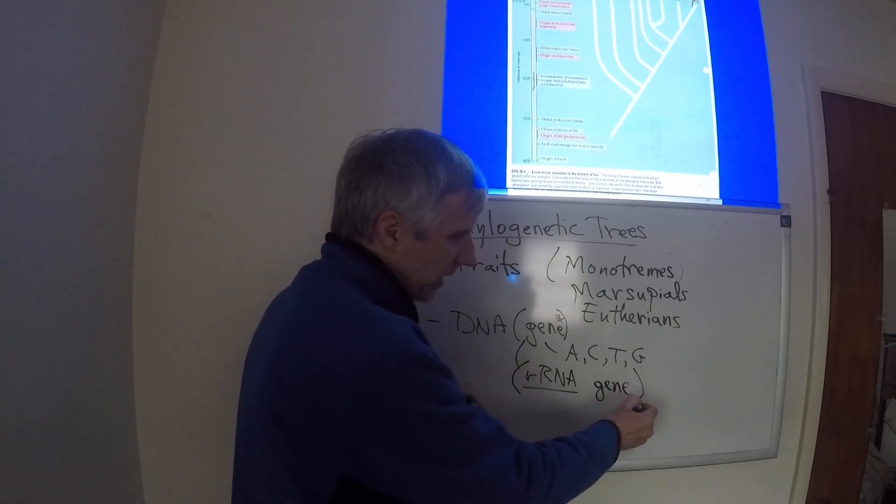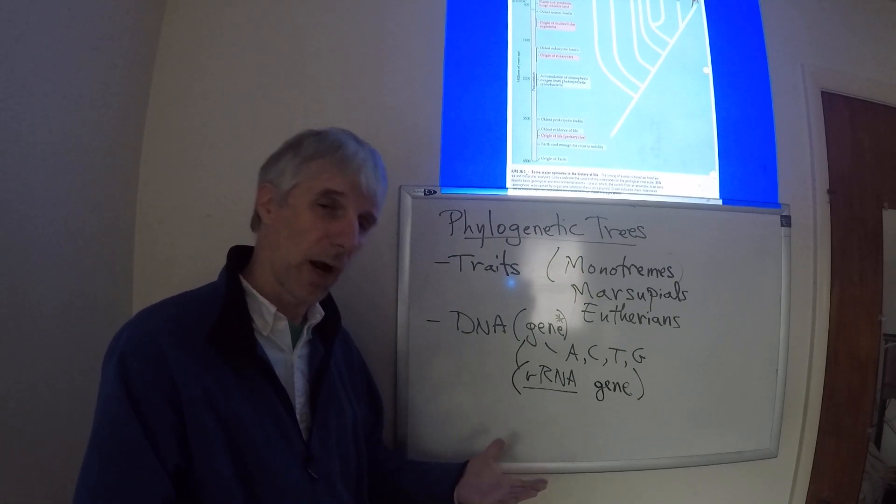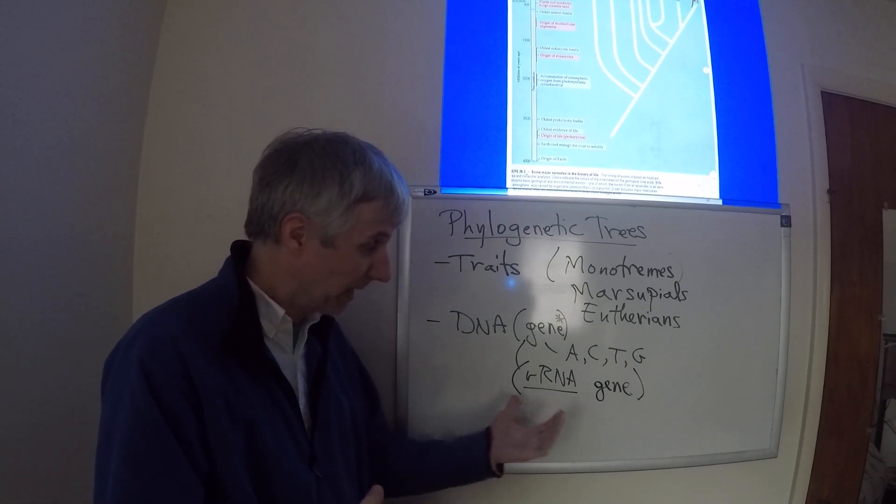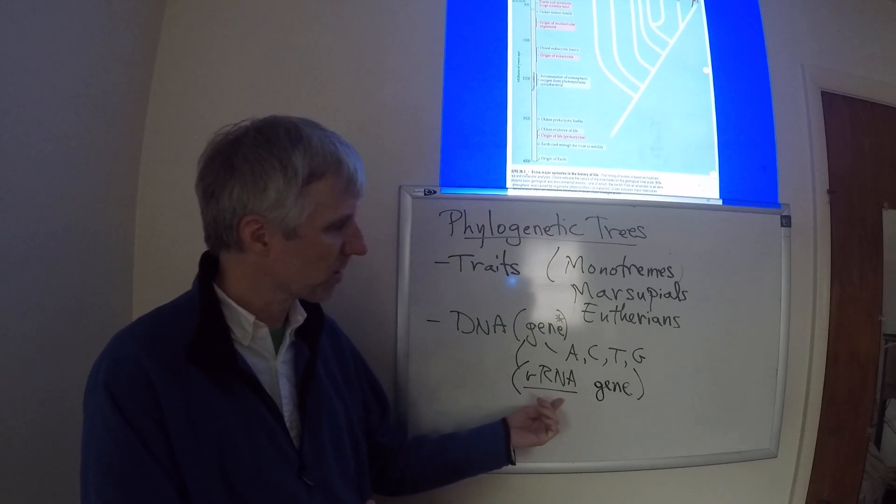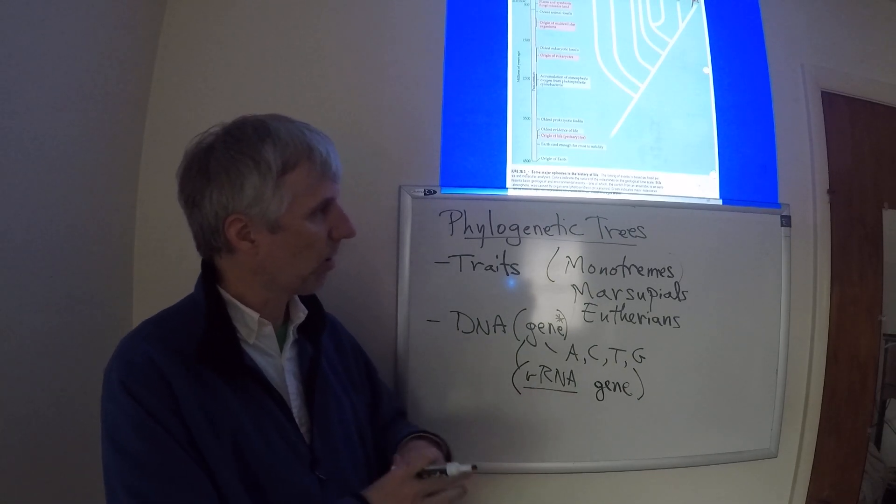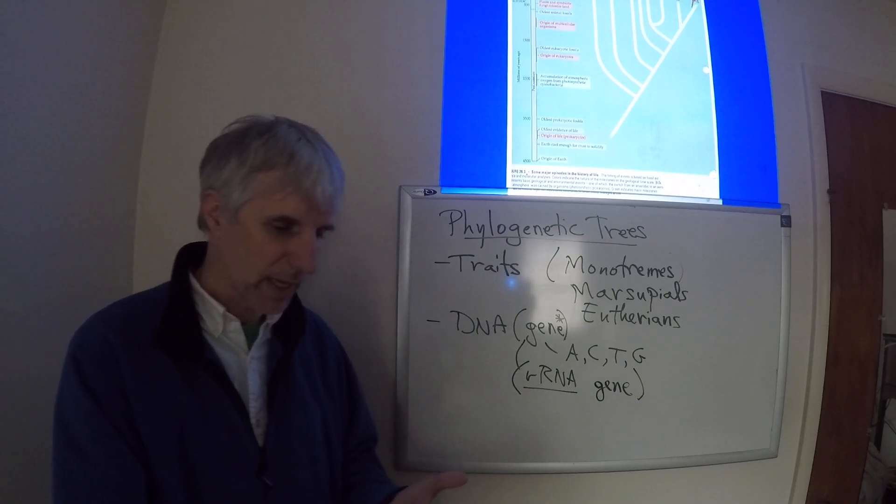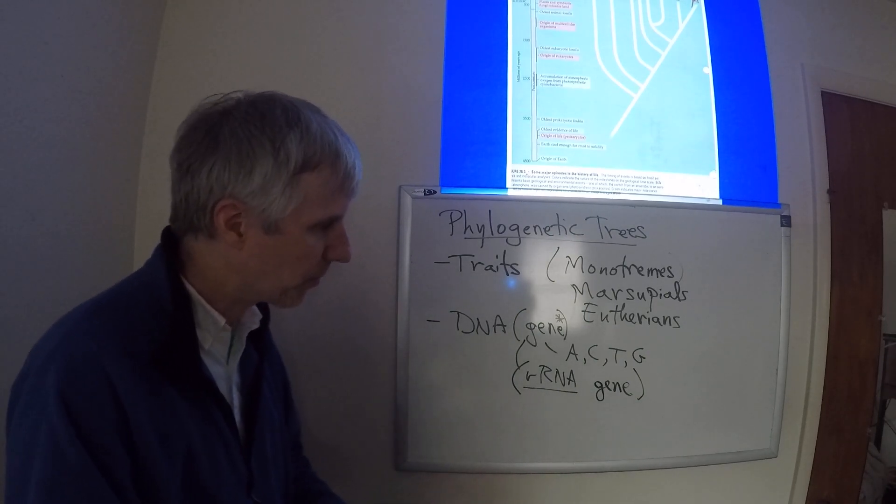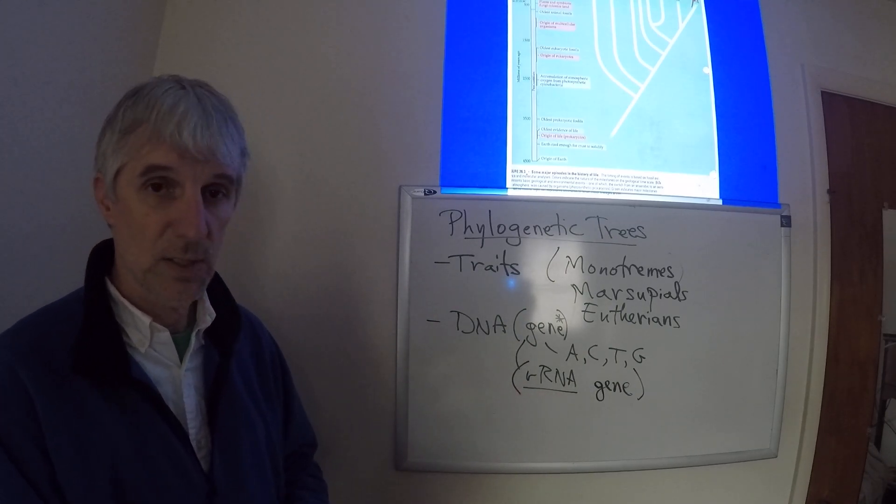Well, all organisms have ribosomal RNA genes because all organisms have to build ribosomes, and they need to build ribosomes because they ultimately need to build protein. So, what we'll do is find this ribosomal RNA gene across all organisms, bacteria, archaea, plants, animals, fungi, protists, whatever else we could find. Let's just look at a bunch of these sequences.